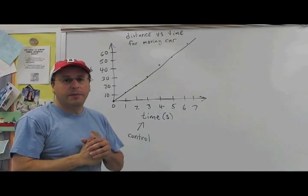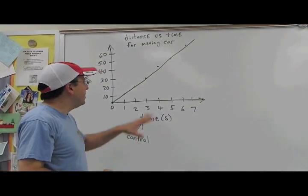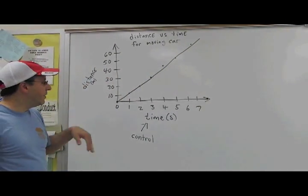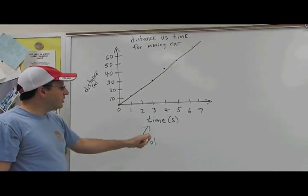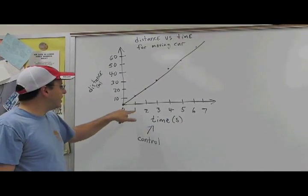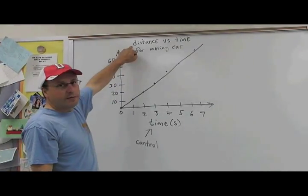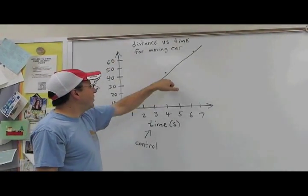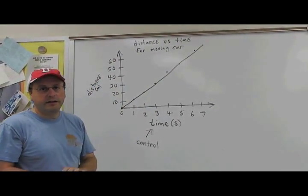These are the parts of a good graph: labels for each axis, units for each axis, a scale for each axis, a descriptive title, data points, and then a smooth line that best fits your points.